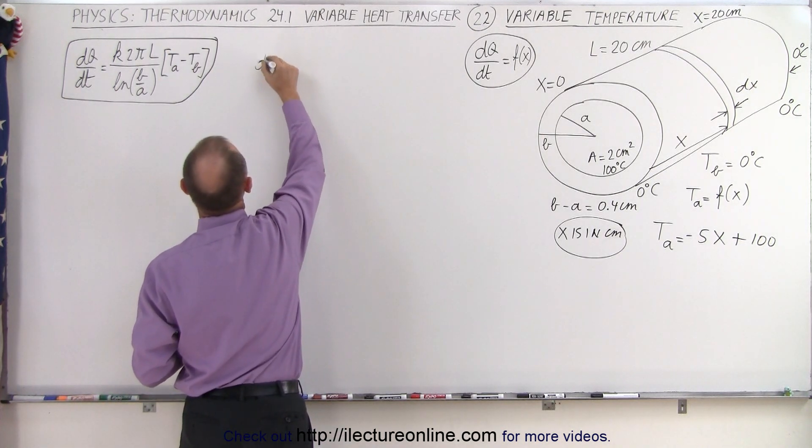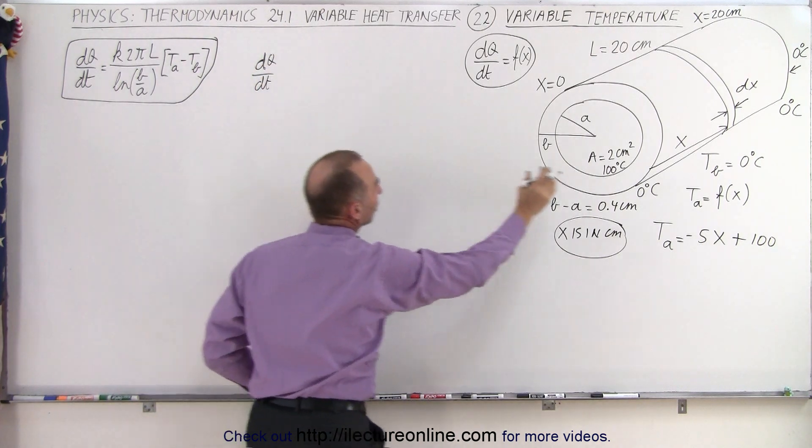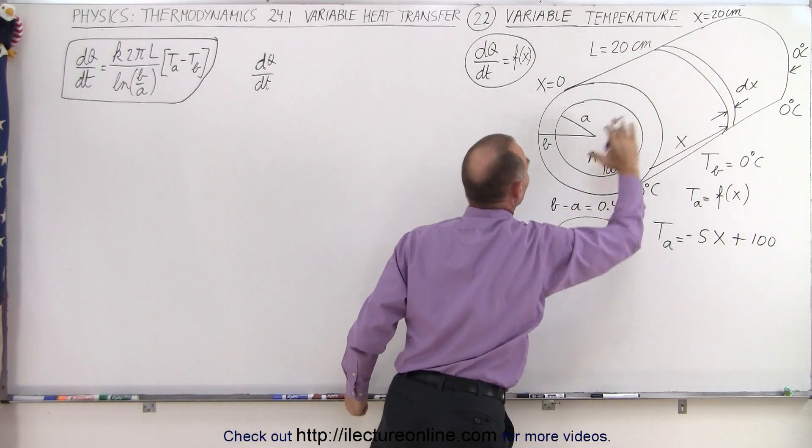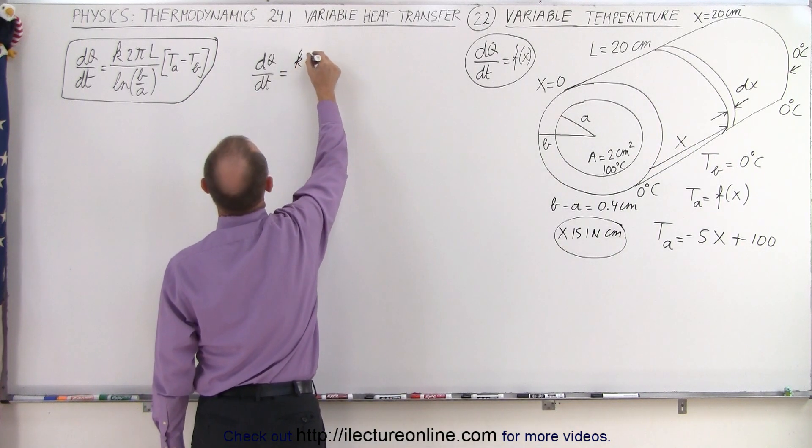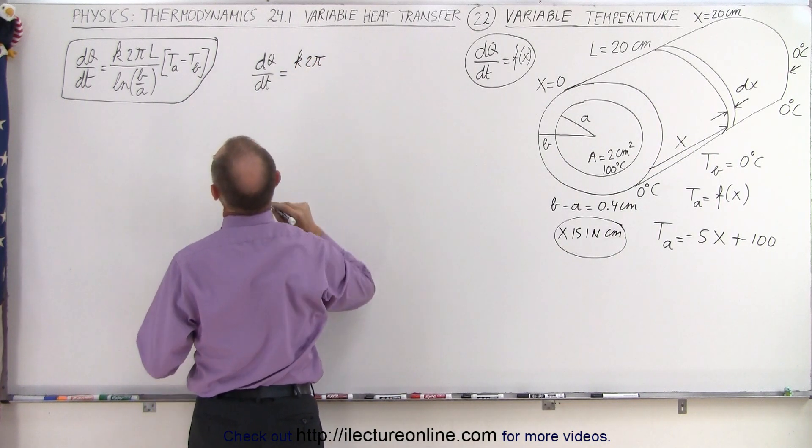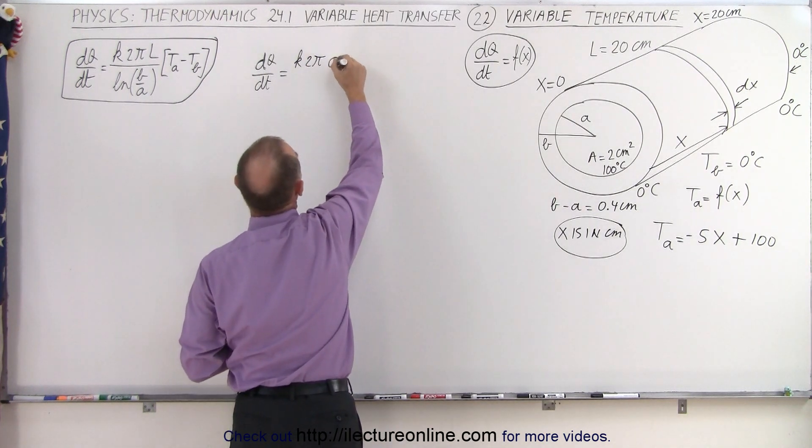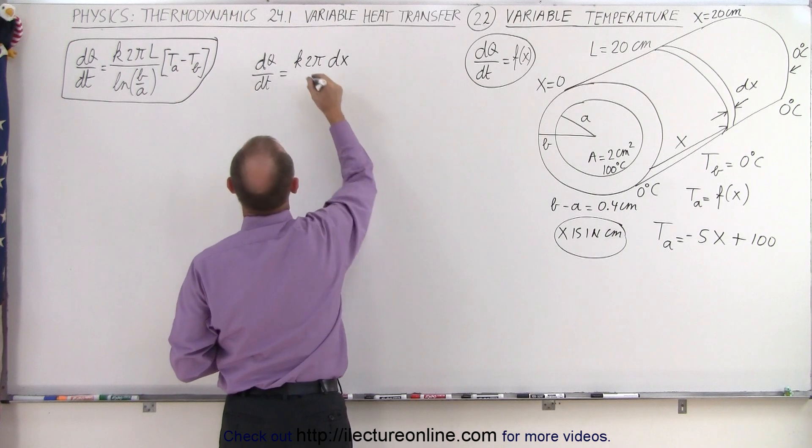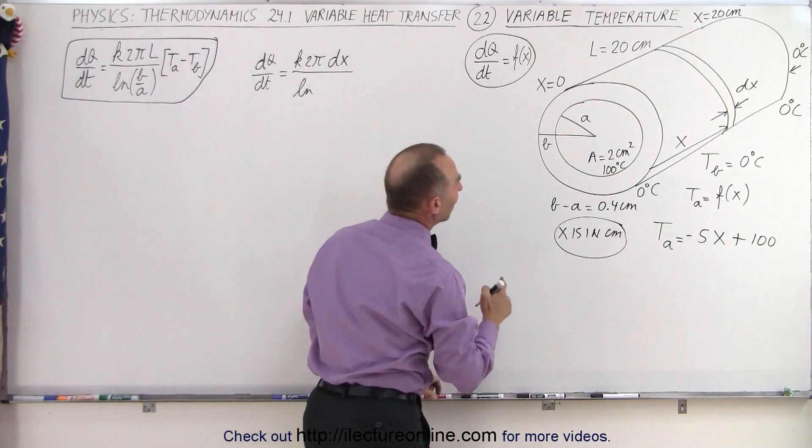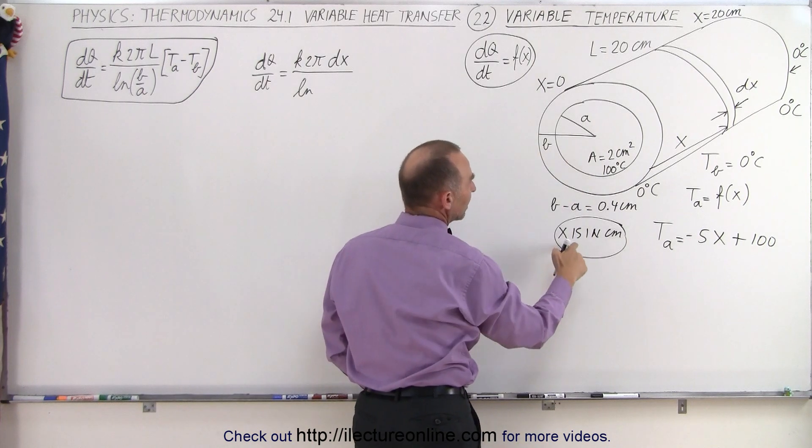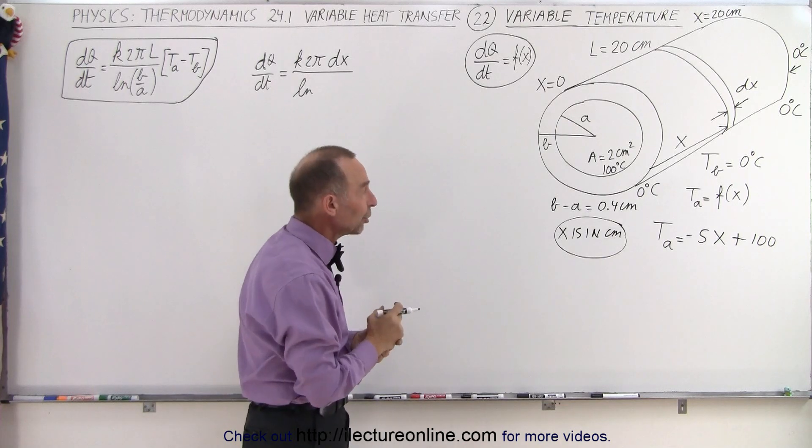We can say that dq/dt for a small little segment of the entire cylinder is going to be equal to K times 2 pi times L. Now L would be the length. In this case, the length would be a dx. We divide that by the natural log of B divided by A. Now we have the outside diameter being 0.4 centimeters larger than the inside diameter, but we don't know the inside diameter.